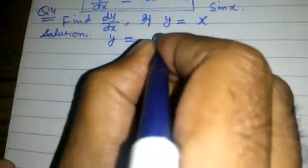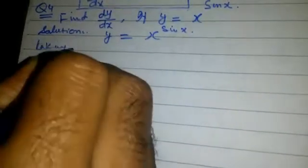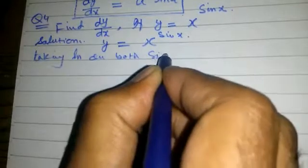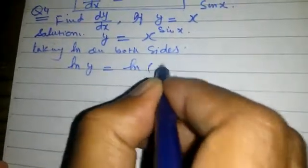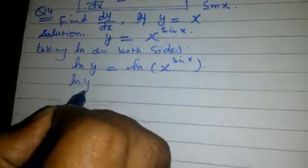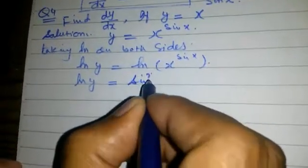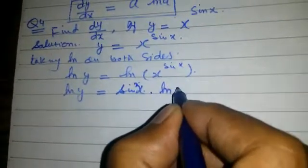y is equal to x to the power sin x. Taking log on both sides: log of y is equal to log of x to the power sin x, which gives log y is equal to sin x into log x.